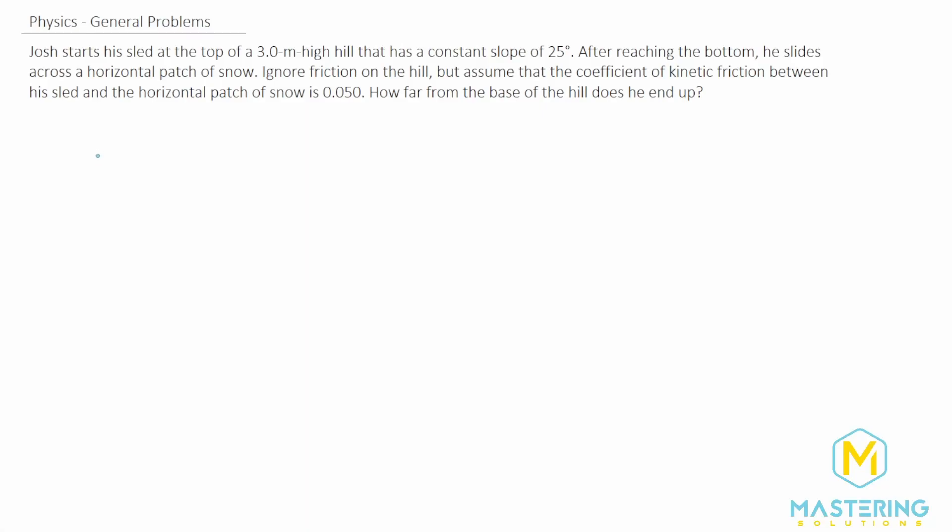Welcome to Mastering Solutions. This general problem tells us that Josh starts his sled at the top of a three meter high hill that has a constant slope of 25 degrees.